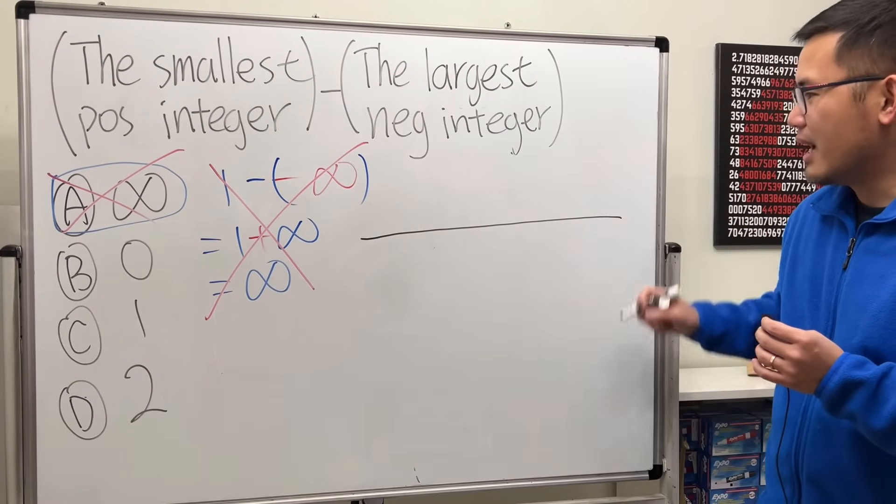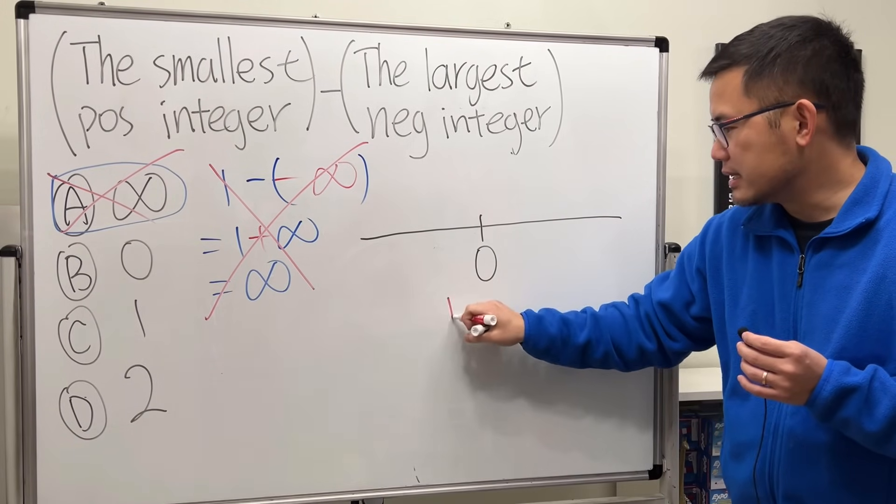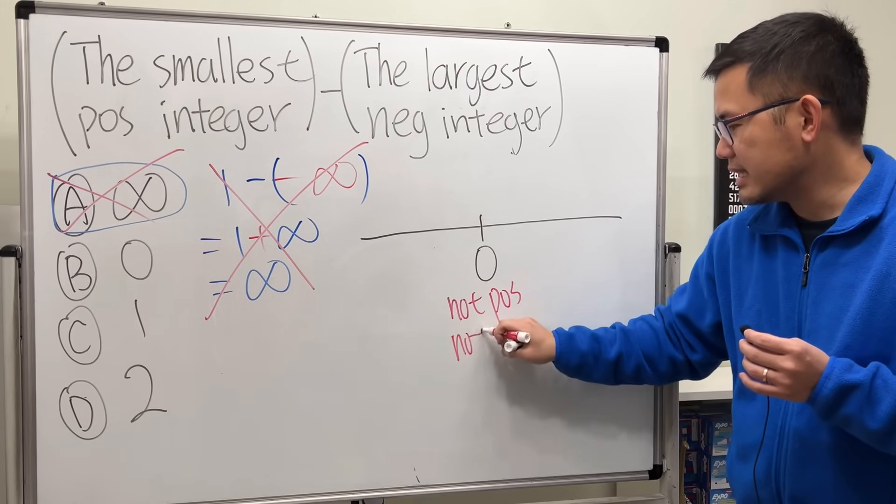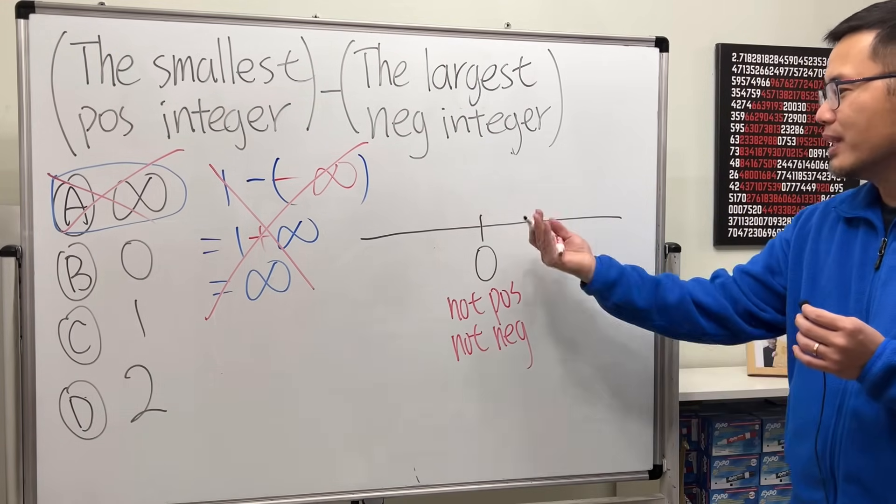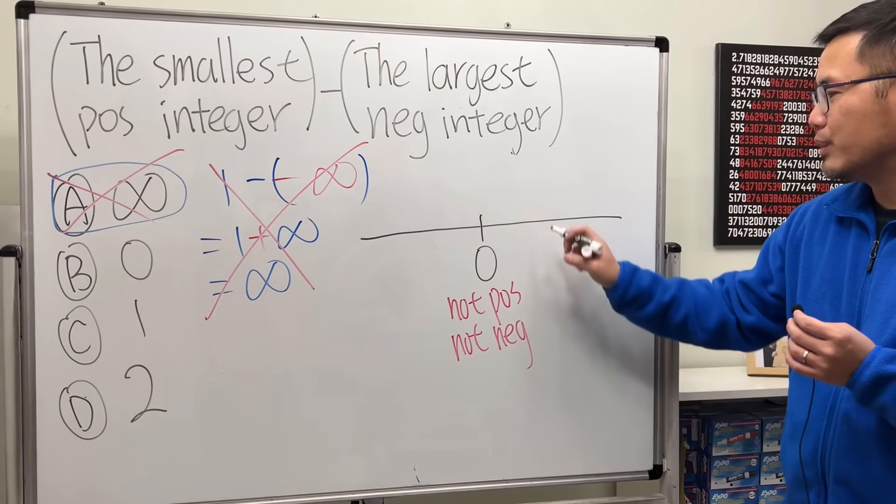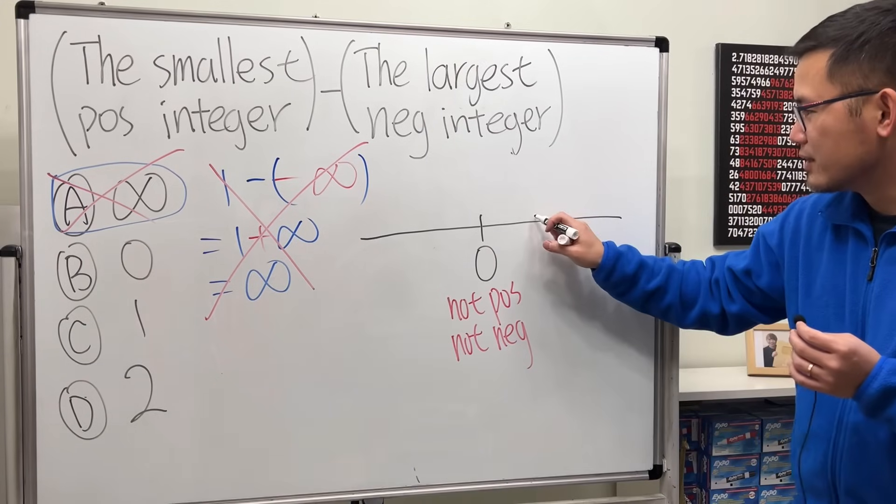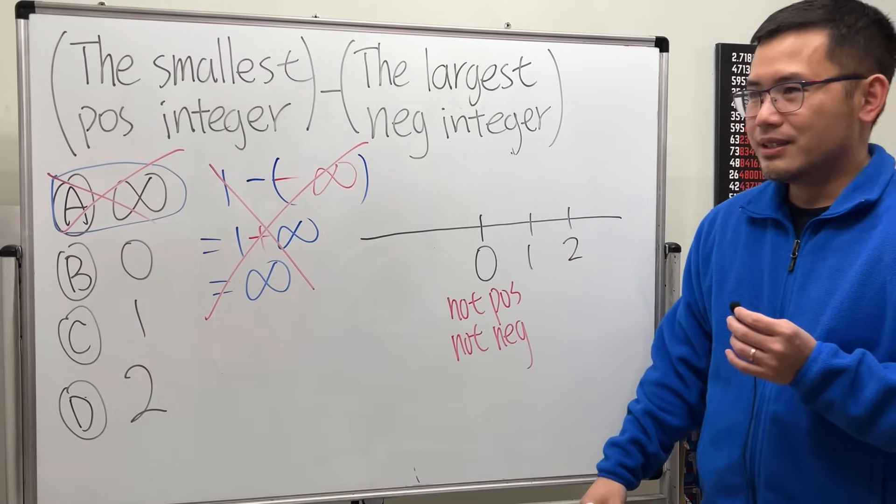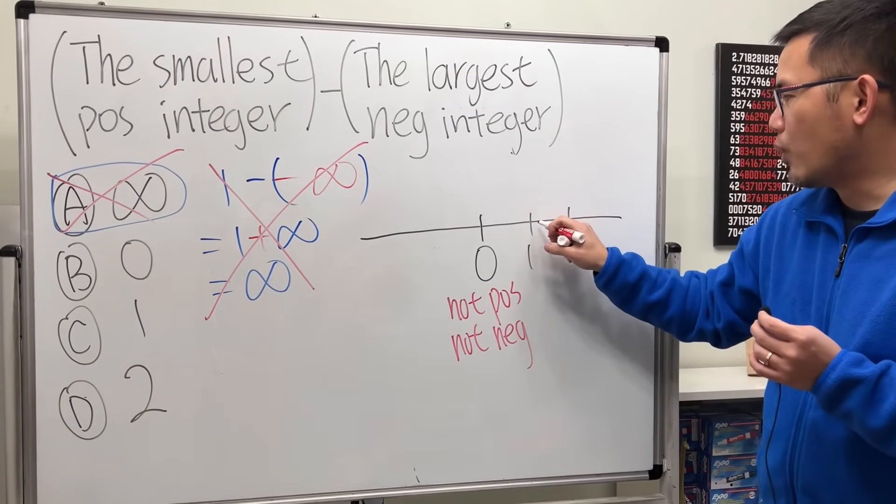Have a look at the number line. Let's put zero right in the middle. Remember, zero right here is not positive and is also not negative. It's like a neutral number. So anything towards the right of zero is positive, and then we will have whole numbers because we are talking about integers. So we have one, two, three, four, five, and so on. For sure, the smallest positive integer is one right here.